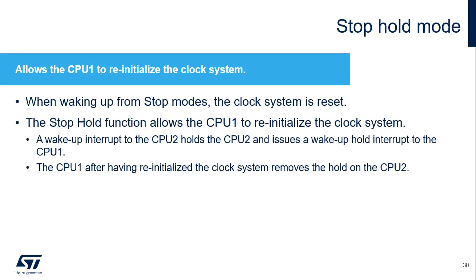To allow CPU1 to reinitialize the clock system when exiting from Stop modes, the Stop Hold function holds CPU2 until CPU1 has reinitialized the system. A wake-up from Stop mode interrupt holds CPU2 and wakes up CPU1 with a wake-up hold interrupt. Once CPU1 has reinitialized the system, it releases the CPU2 hold.